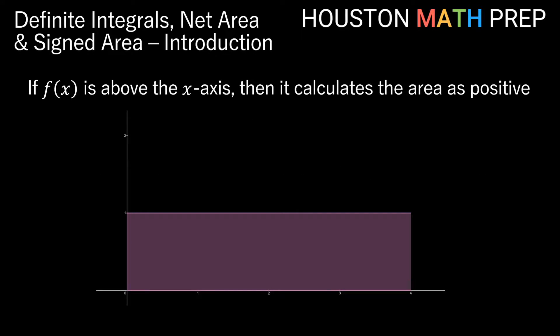If our function is above the axis, then our definite integral calculates the area as positive. If the top of this rectangular region is our function, then this region is above the axis. Since it's a rectangle, it's one unit tall and four units wide, so our definite integral would calculate the area under this function from x equals zero to x equals four as four units.